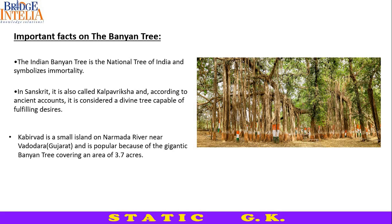Kabir Vat is a small island on the Narmada river near Vadodara, Gujarat, and is popular because of a gigantic Banyan tree covering an area of 3.7 acres, which you can see in the photo. This is a huge and very famous Banyan tree in Gujarat.